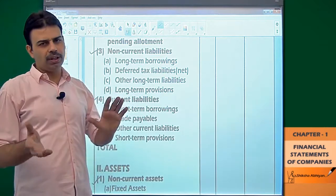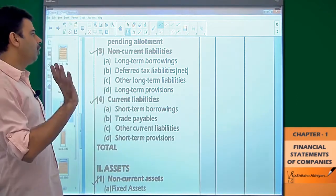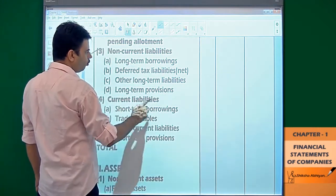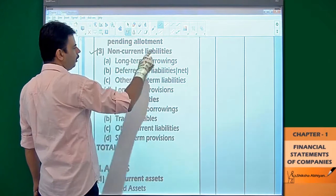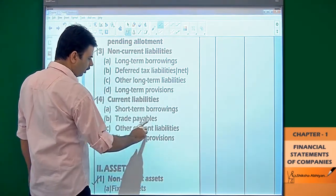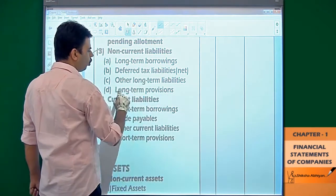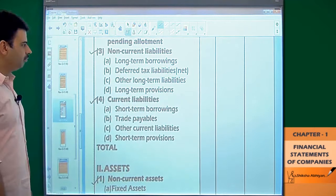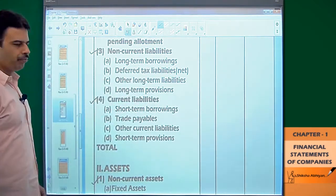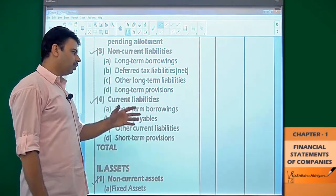We need to determine which ones are current and which are non-current. From an examination point of view, the headings are: under current liabilities — short term borrowings, trade payables, other current liabilities, and short term provisions. Under non-current liabilities — long term borrowings, other long term liabilities, long term provisions, and deferred tax liability. Note that deferred tax can appear on both the asset side and the liability side.